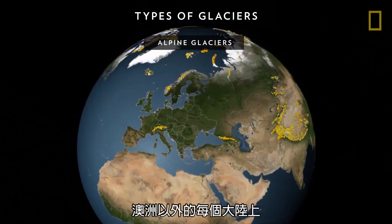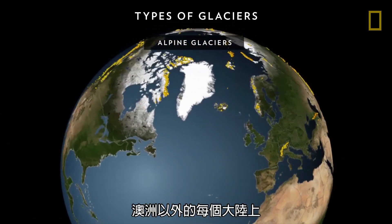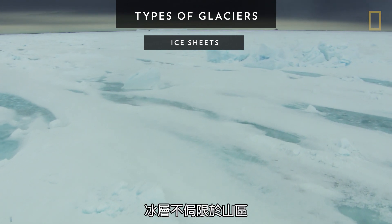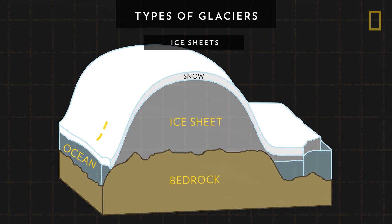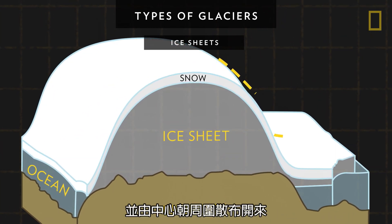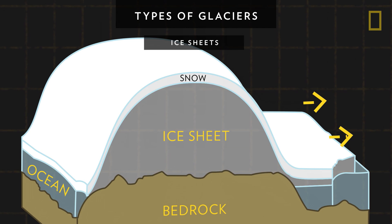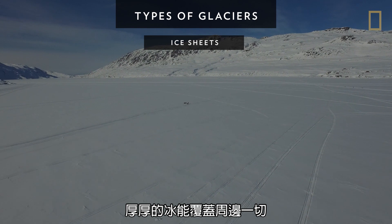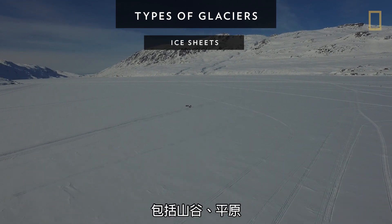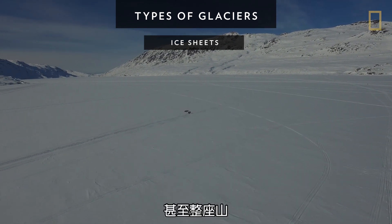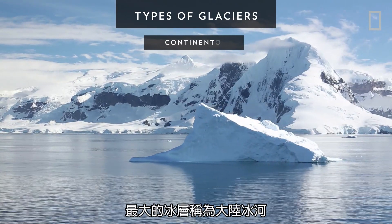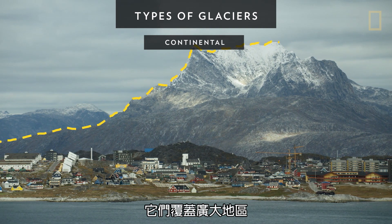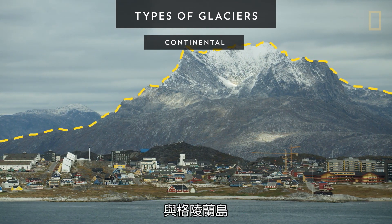These glaciers are found on every continent except Australia. Ice sheets, unlike alpine glaciers, are not limited to mountainous areas. They form broad domes and spread out from their centers in all directions. As ice sheets spread, they cover everything around them with a thick blanket of ice, including valleys, plains, and even entire mountains. The largest ice sheets are called continental glaciers. They cover vast areas including most of Antarctica and the island of Greenland.